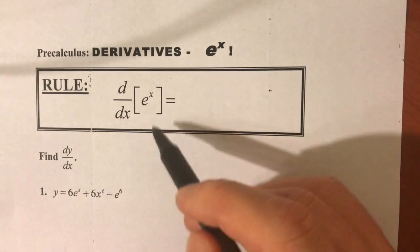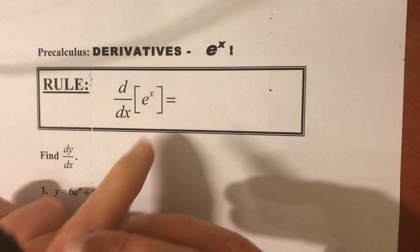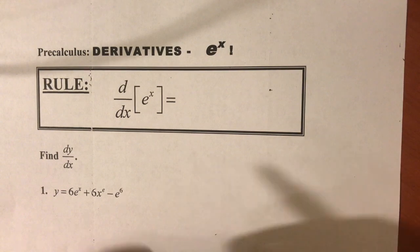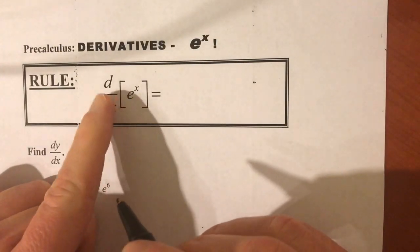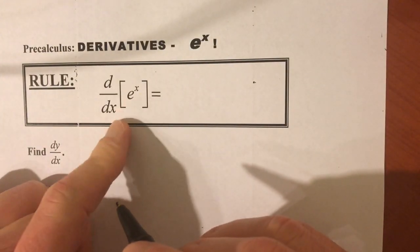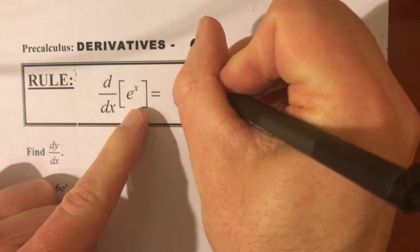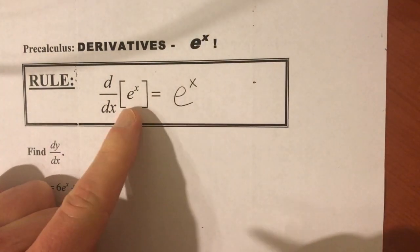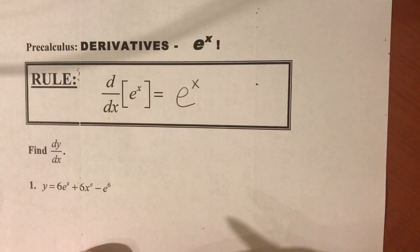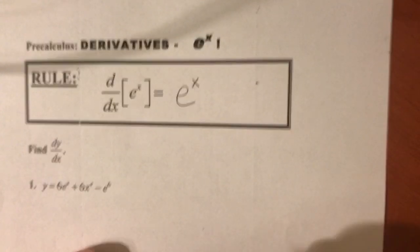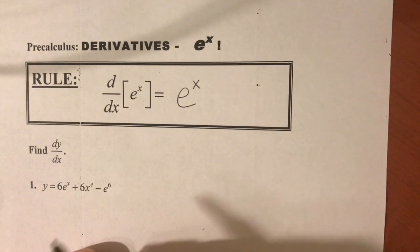And so this has got its own set of rules. And this is the first exponential rule you'll learn. So here it is. Ready? The derivative of e to the x with respect to x is e to the x. And that's pretty cool. It's the only function whose derivative is itself. And that's it.